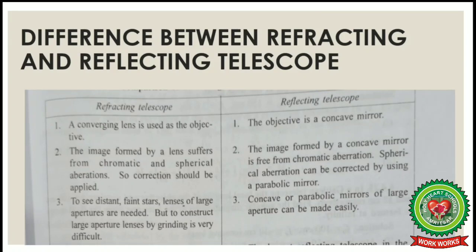Now the differences between refracting and reflecting telescopes: in a refracting telescope, the objective used is a converging lens called a convex lens, but in the case of a reflecting telescope, a concave mirror is used as the objective. In a refracting telescope, the image formed by the lens suffers from chromatic and spherical aberrations, which are defects that occur when light falls on the lens and the image formed is not a clear one.